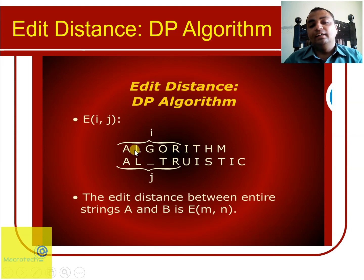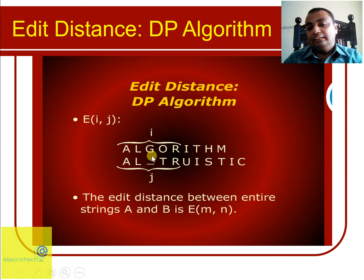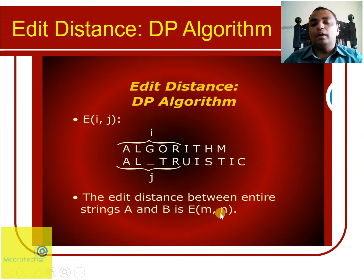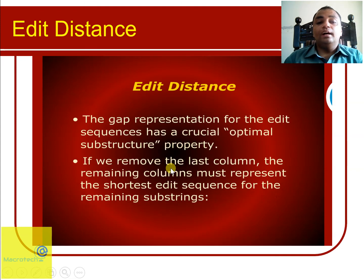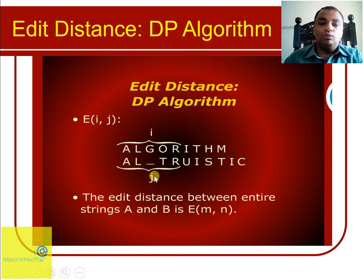میں نے یہاں پہ یہ algorithm کو artistic انداز میں دکھایا ہے۔ یہاں پہ میں نے 5 characters لیے a, l, g, o, r — اور نیچے algorithm کے حوالے سے 4 characters لیے ہیں۔ یہاں پہ آپ کو ڈیش نظر آ رہی ہے — وہ delete یا replace کی علامت ہے۔ تو e of m comma n — جہاں m اور n پوری strings کے characters ہیں — اس وقت i = 5 اور j = 4 پہ کھڑا ہے۔